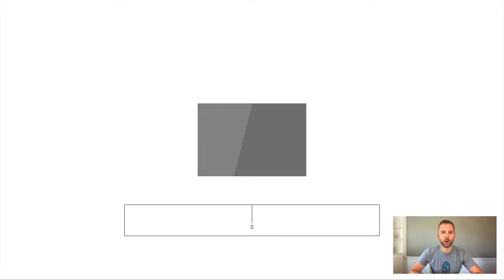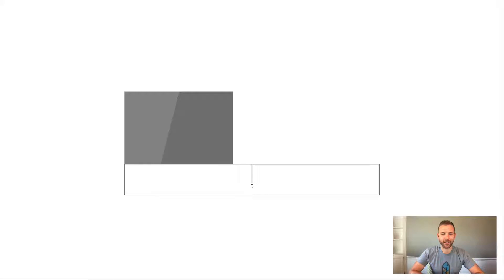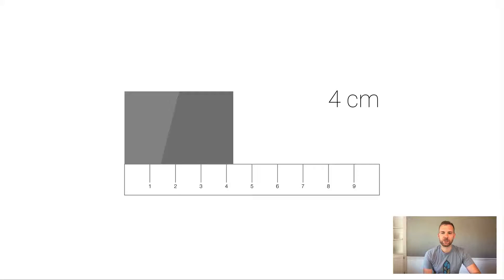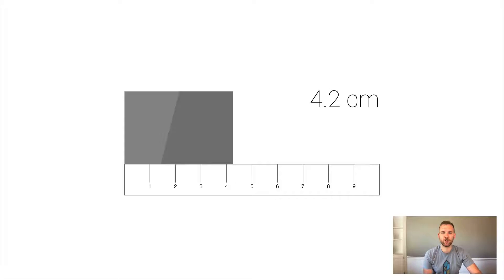Let's say I wanted to get the length of this piece of metal. With a poor ruler, I can give it my best shot — I know it's longer than zero centimeters but not quite five, so maybe I'll say it's four centimeters. With a better ruler, I can see it's between four and five, so maybe four point two centimeters. And with an even better ruler with more hash marks, I can say it's four point two five centimeters.